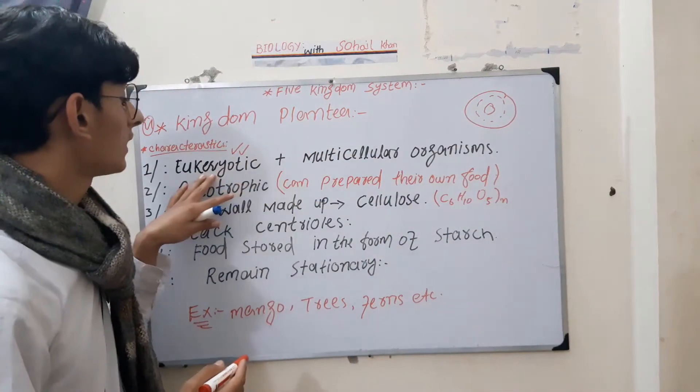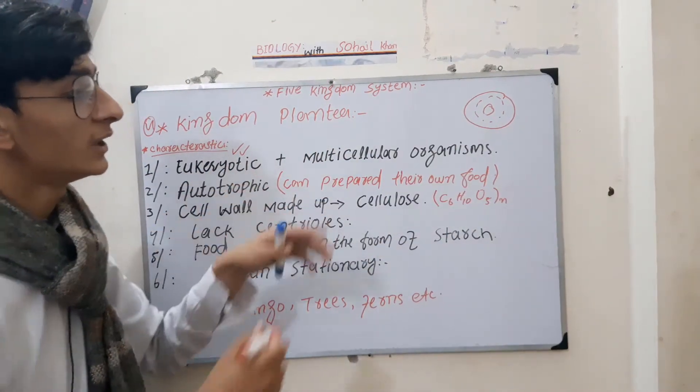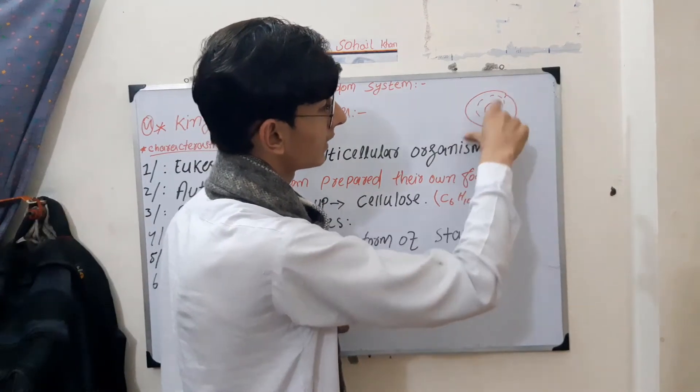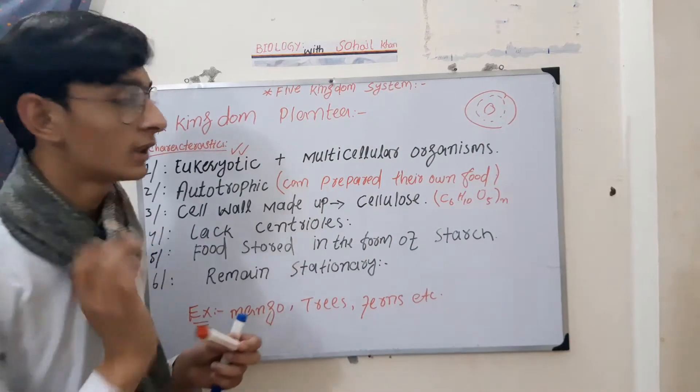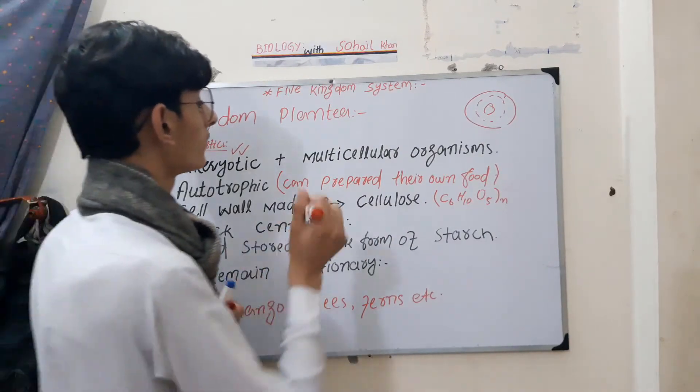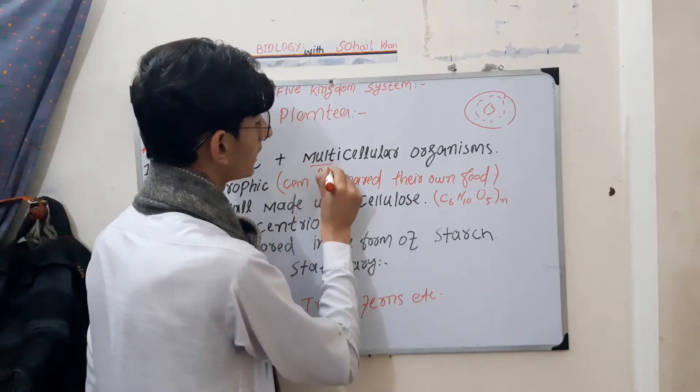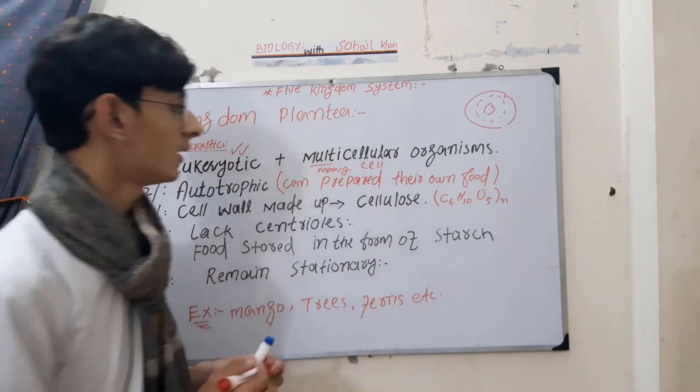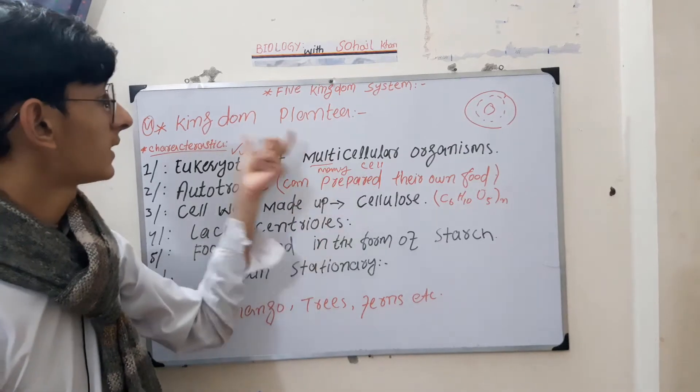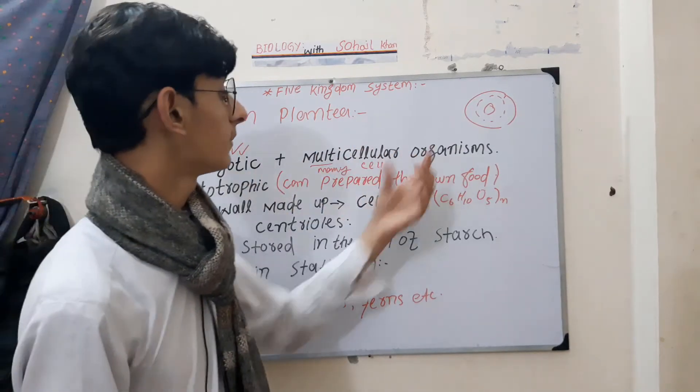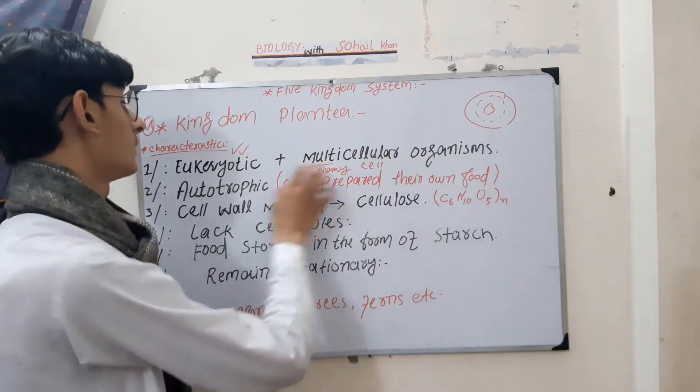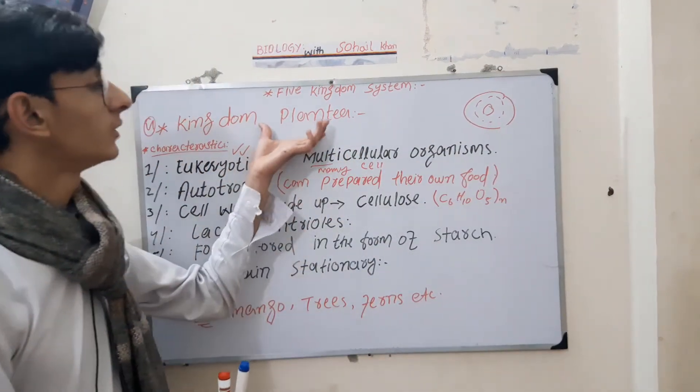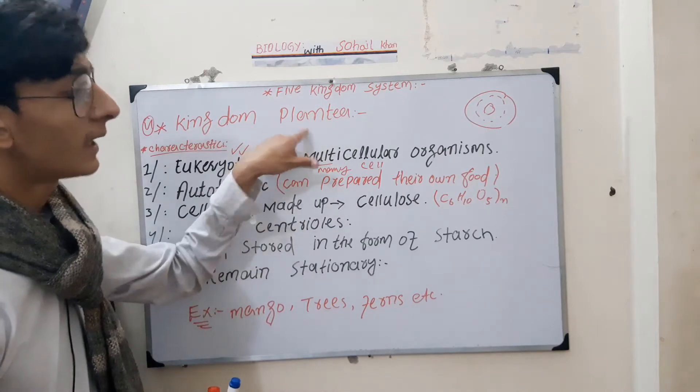Multicellular means many cells. Many similar cells are joined together in multicellular organisms. In plant organisms, many cells come together. The organism is eukaryotic and the plant is in Kingdom Plantae.